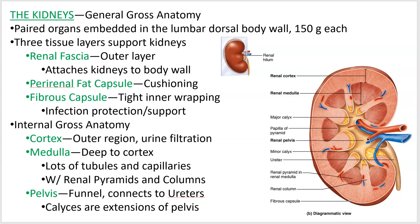It all starts in the kidneys. You have two of them, so they're paired, and they're embedded in your lower back. They have three layers on the outside that attach them to the body wall and protect them. The outermost is called the renal fascia — a connective tissue layer like protective packaging. Then you've got the perirenal fat capsule just inside that, which is for cushioning, and then a fibrous capsule tightly wrapped around the kidney itself, which provides support and protection from infection.